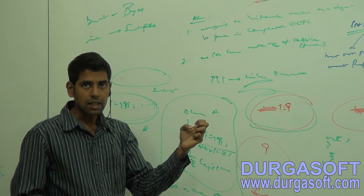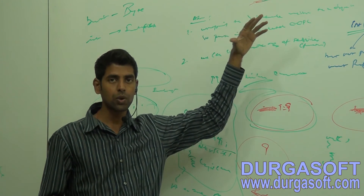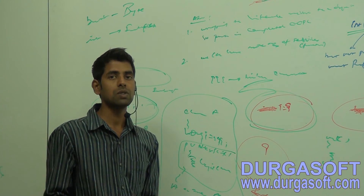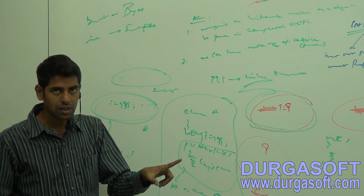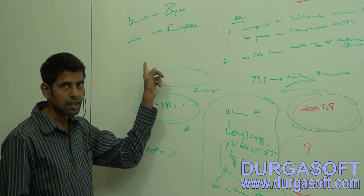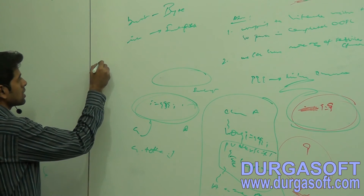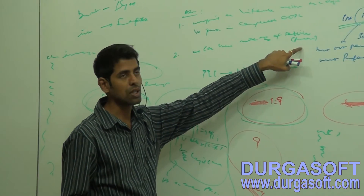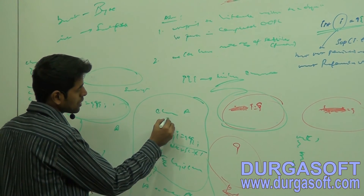To summarize the advantages: number one, we can represent primitive variables as objects, so Java can behave as a completely object-oriented programming language. Number two, by using these wrapper classes we can get more number of services. For example, to convert 999 into hexadecimal. Sun Microsystem's Integer class has given 10, 20, 30+ services - more than what you'd write in your own class. That is the big advantage of wrapper classes.